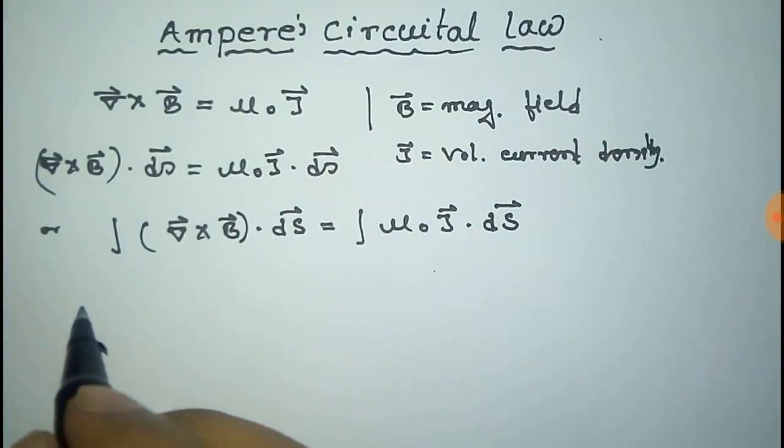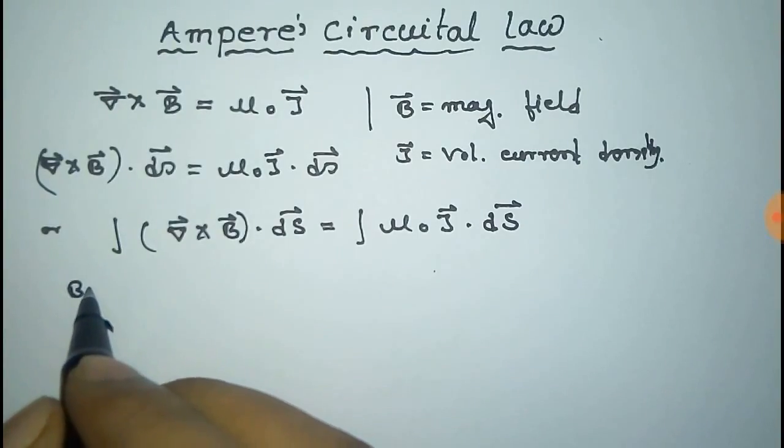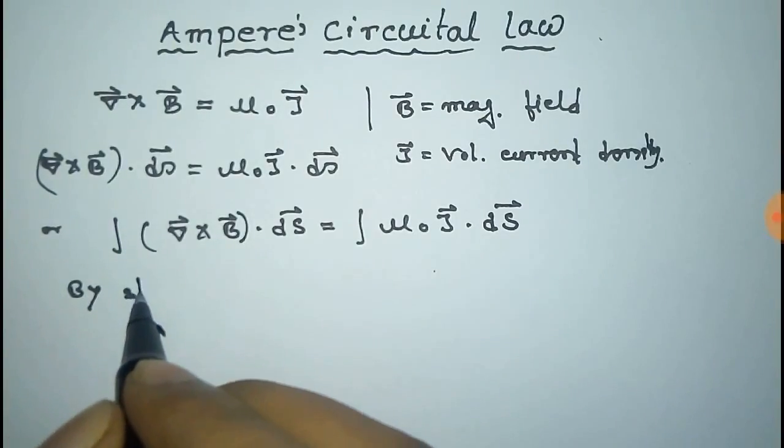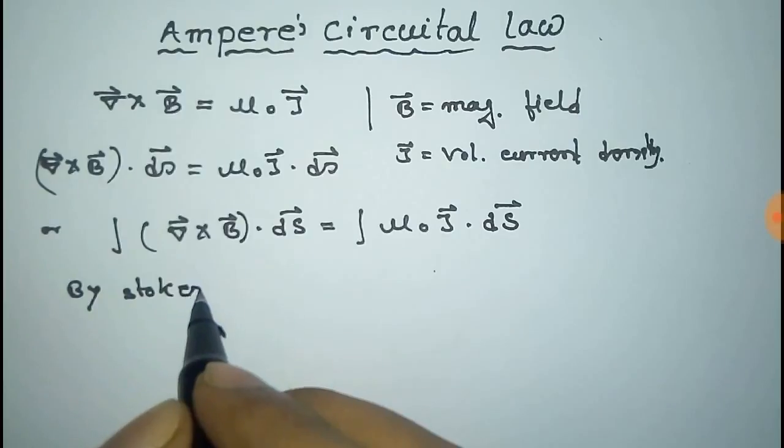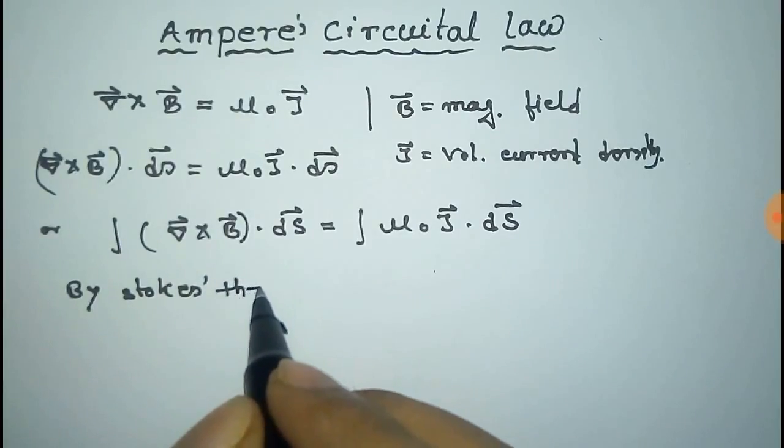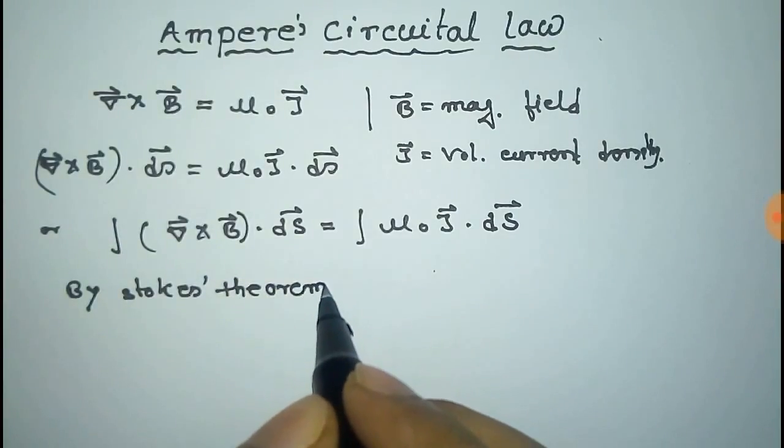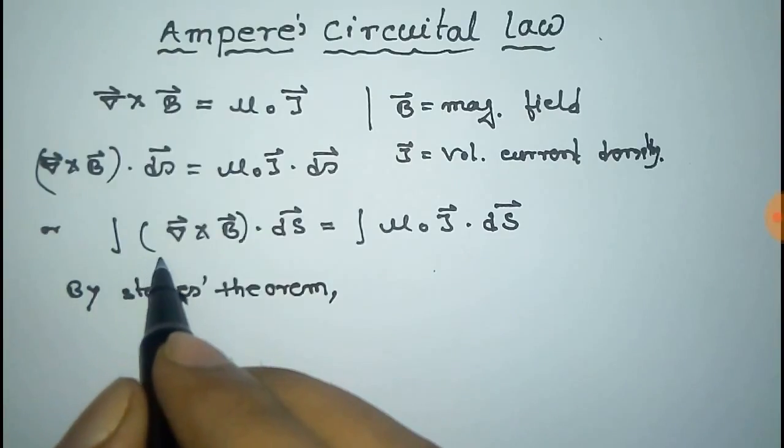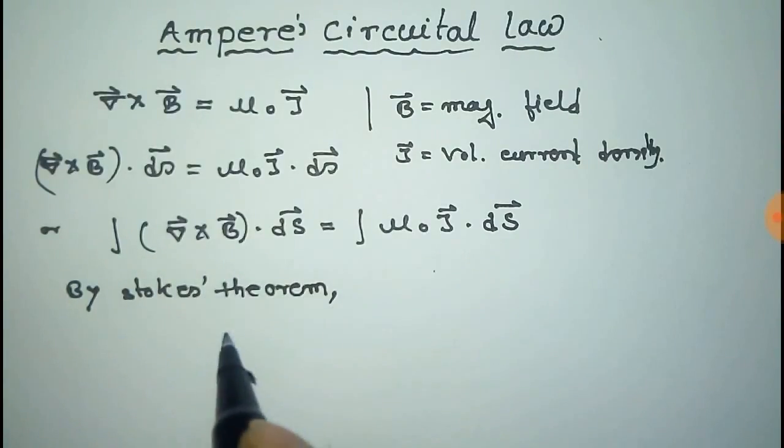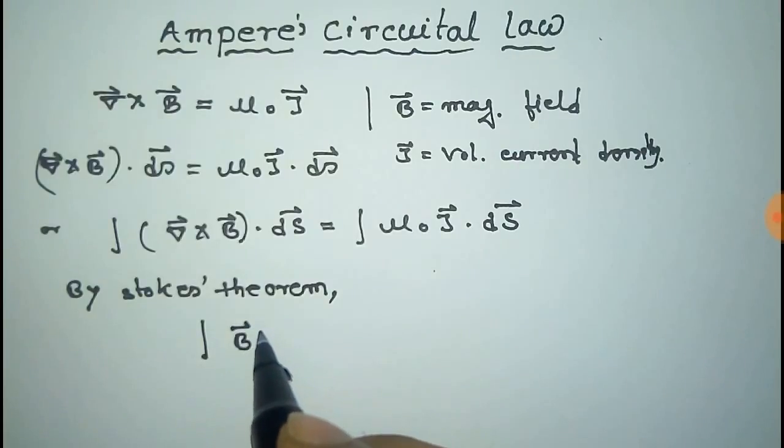Now on applying Stokes theorem on this we get that integral curl B dot ds is equal to line integral of B dot dl.